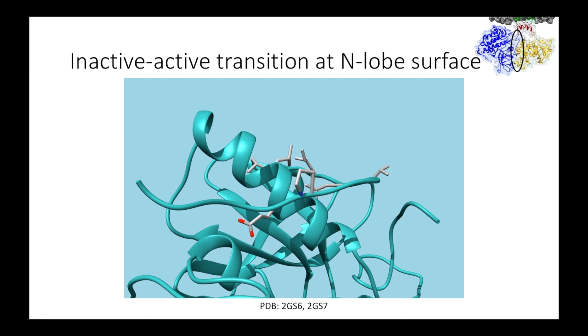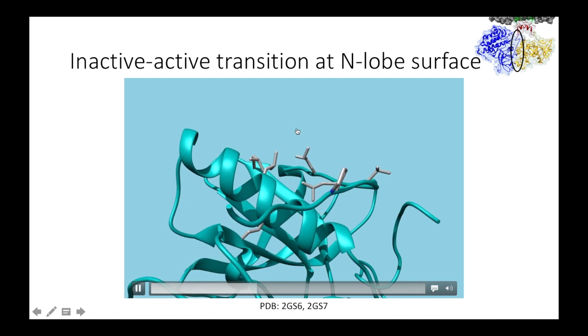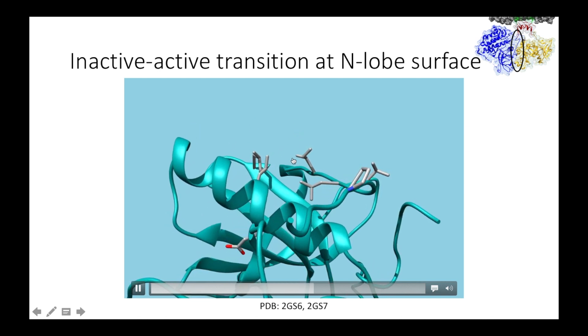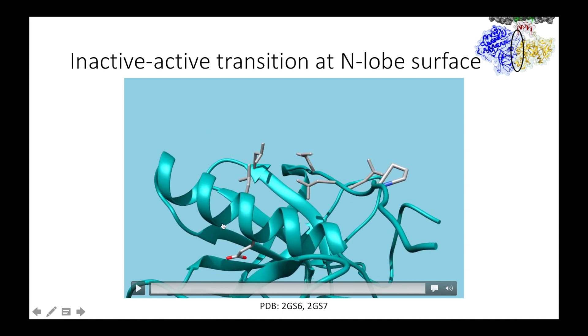Here's a brief animation showing how the N-lobe surface reorganizes from the inactive to active conformation. Imagine the C-lobe of the activator approaching from the top. You can see how this reorganization pushes the helix alpha-C inwards.